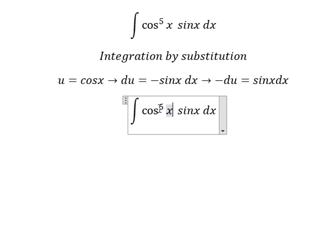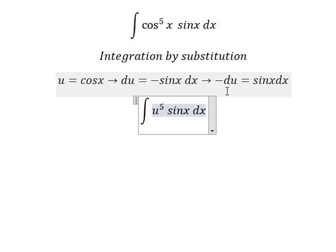So we change cos x for u, and sine x dx we change for negative du.